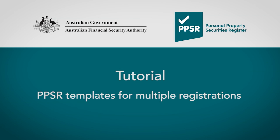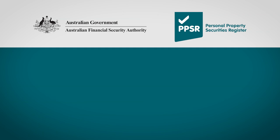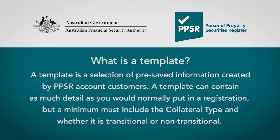This video tutorial explains how to use templates in the Personal Property Securities Register. A template is a selection of pre-saved information created by PPSR account customers. It can include as much detail as you would normally put in a registration, but at a minimum it must include the collateral type and whether it is transitional or non-transitional.